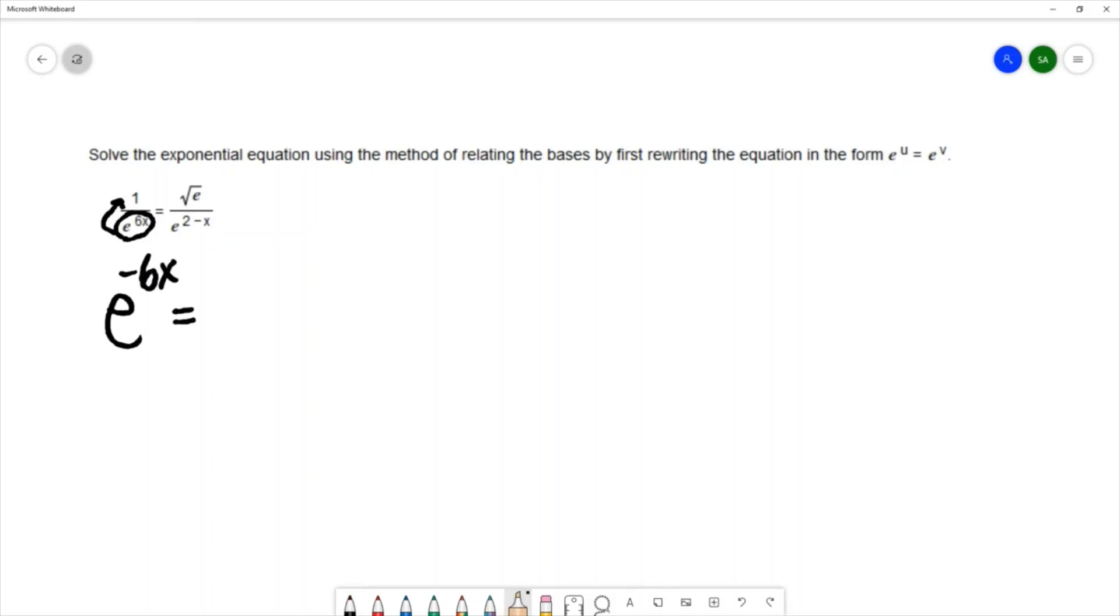On the right hand side we have a radical. We need to keep in mind that radicals can be written as fractional powers. This radical is a square root and we would write that as e to the one half power.